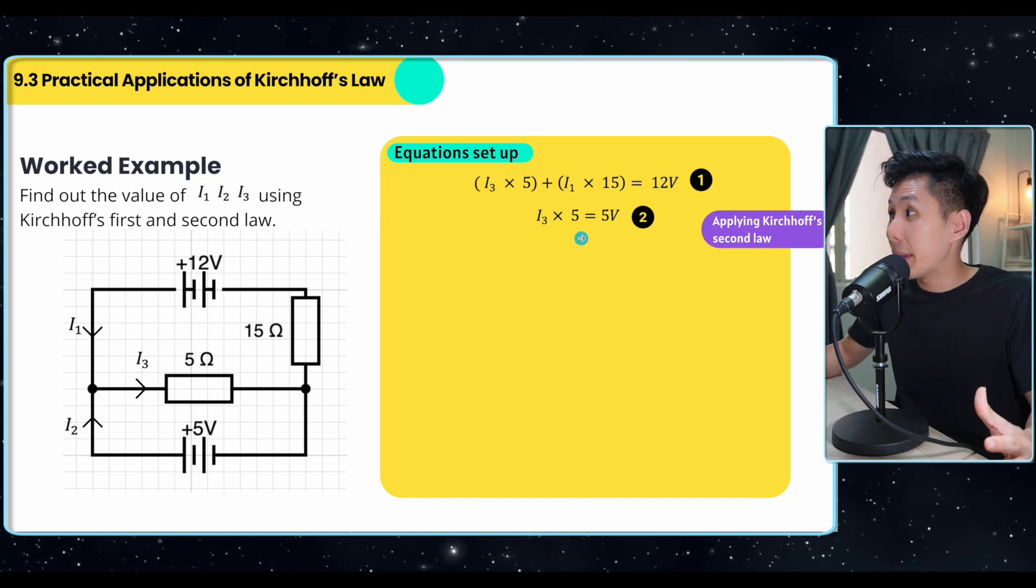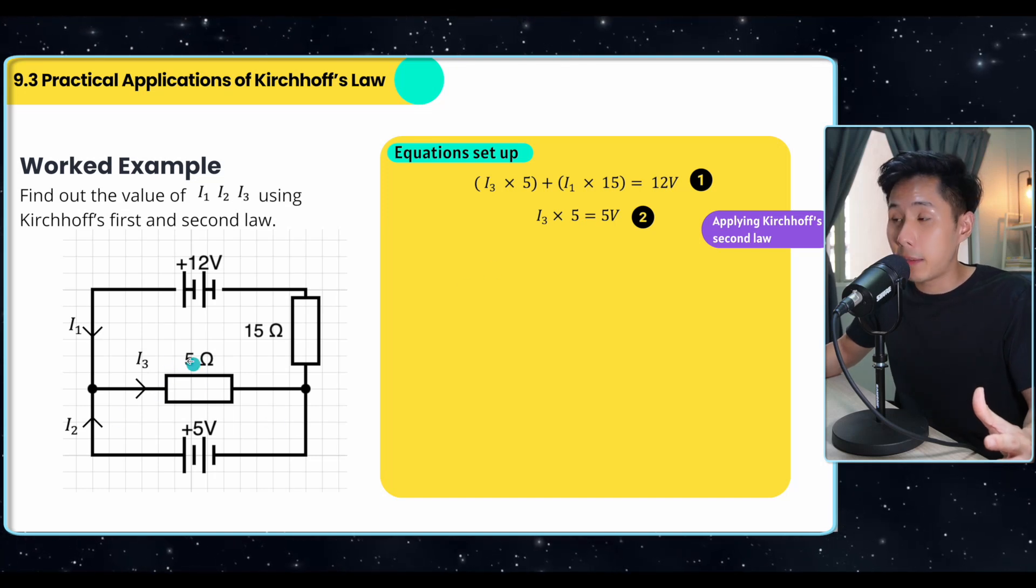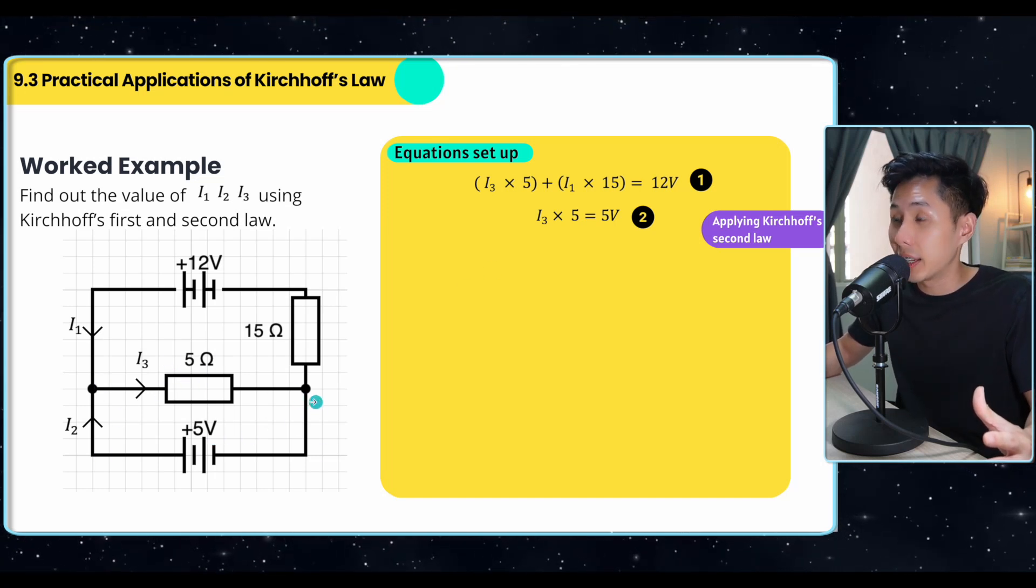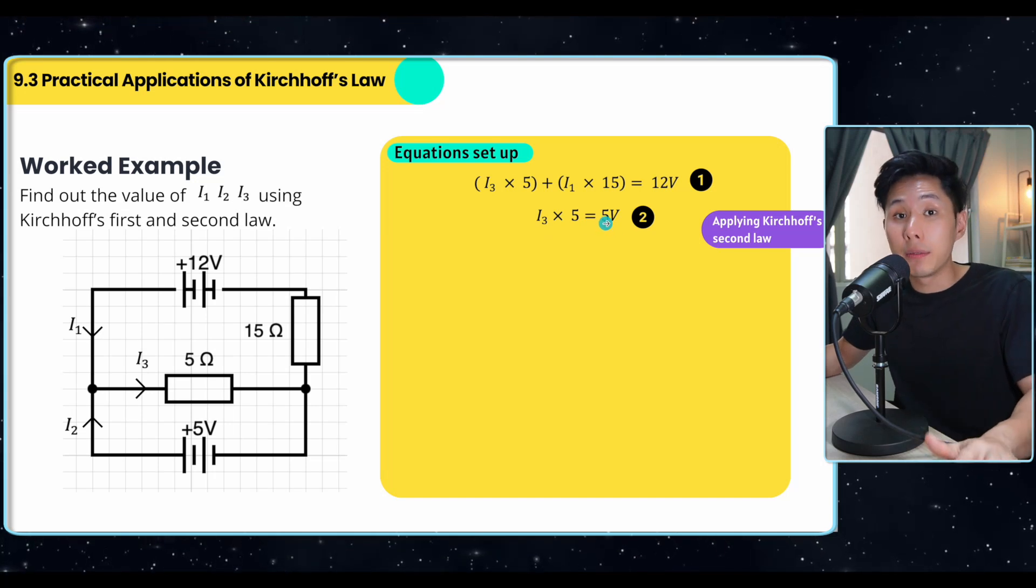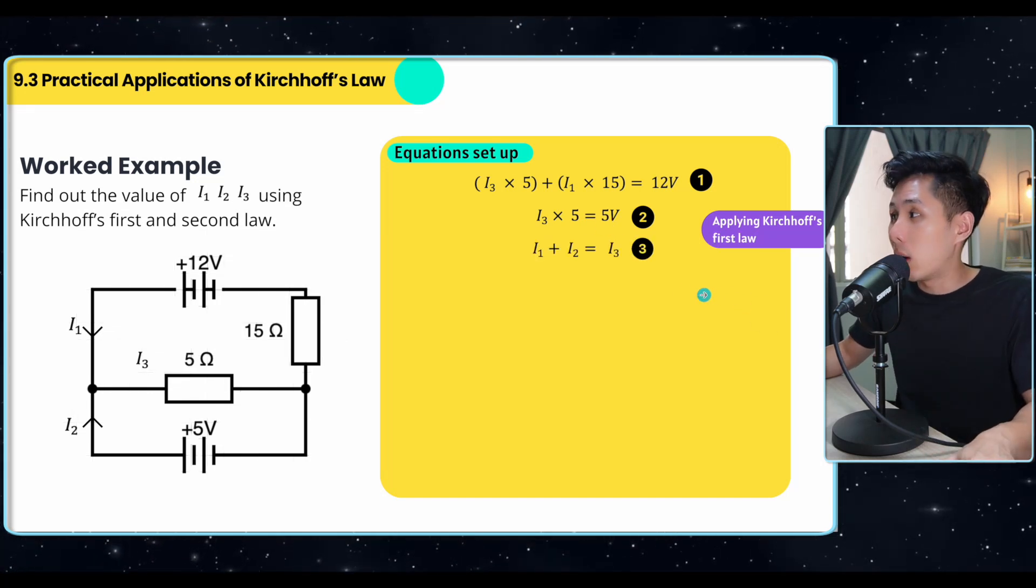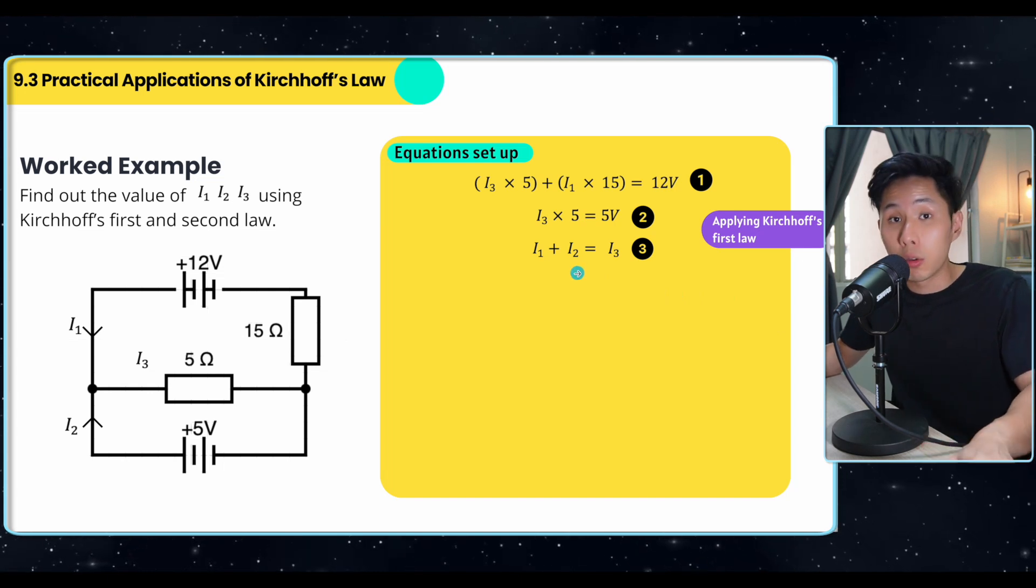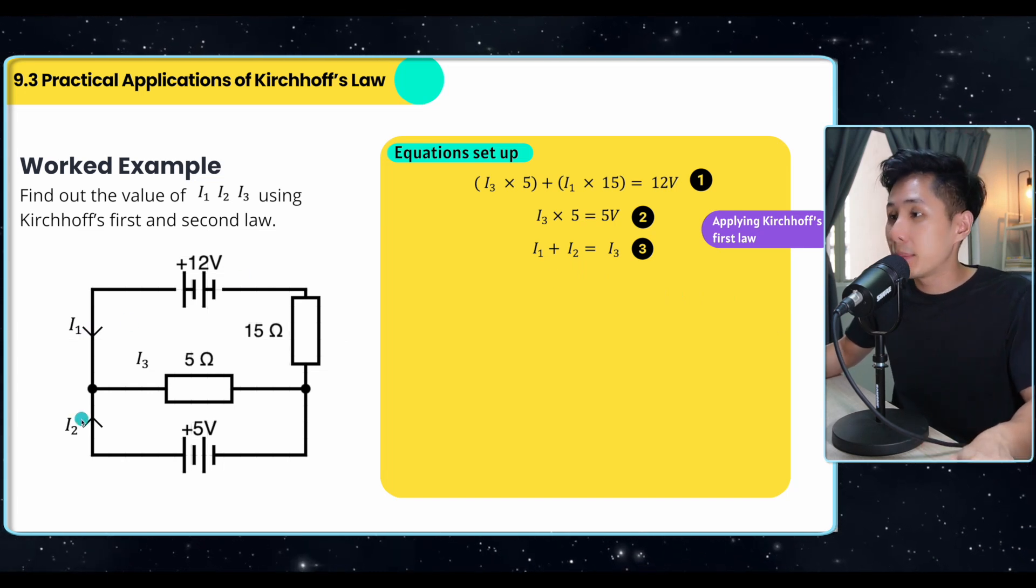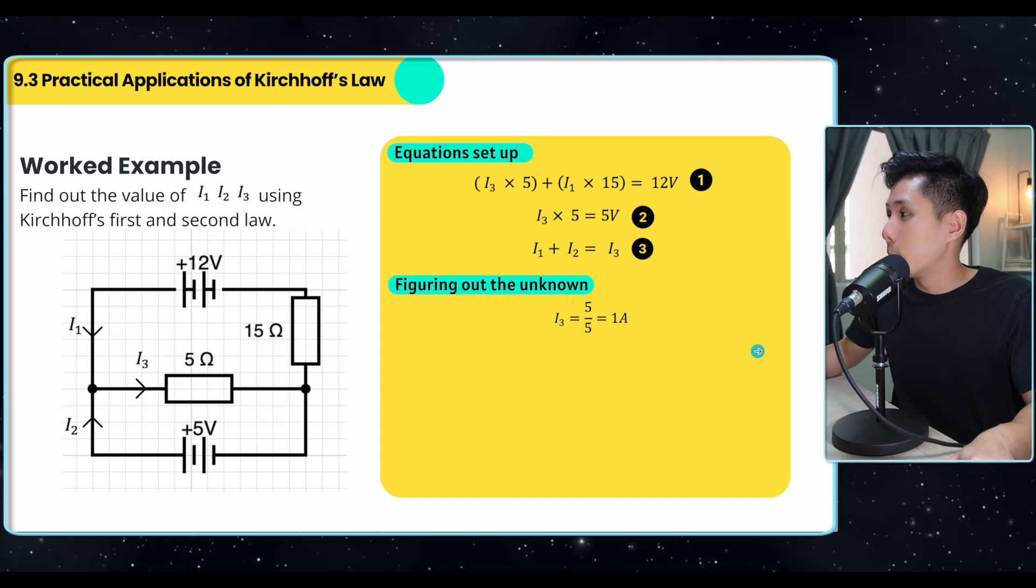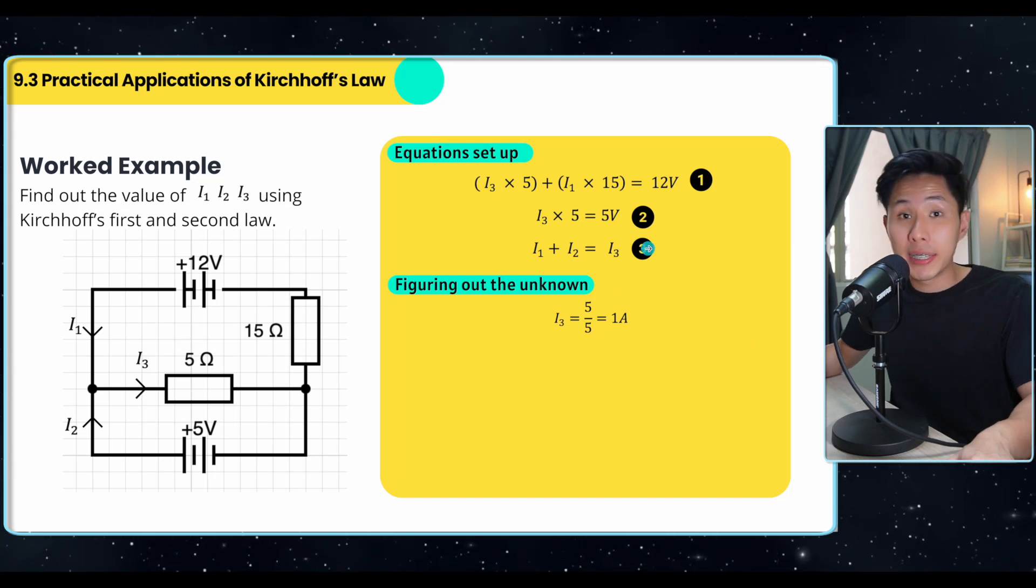Second equation that we can make is I3 times 5 is equal to 5 volt here. Again, you can see this is another loop. The two equations are derived using second law. And then the third one, we know from Kirchhoff's first law, incoming current equal to outgoing current. So we get I1 plus I2 equal to I3.